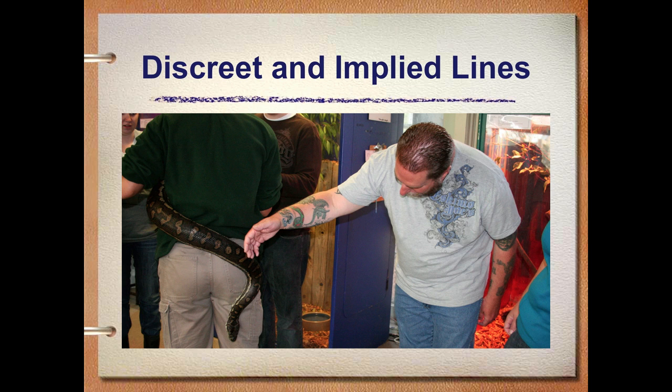In this particular photograph you can see that there are both discrete and implied lines. If you look at the gentleman with the tattoo, the tattoos, now that they are old, are very smooth. If you were to touch them you couldn't actually grab hold of the tattoos, but you see them — so the implied lines of the color between the skin and the tattoo are implied lines. The snake, however, is actually a discrete line; he is actually able to touch the snake. So the tattoos you can't touch are implied lines, versus the snake which is real and therefore a discrete line.